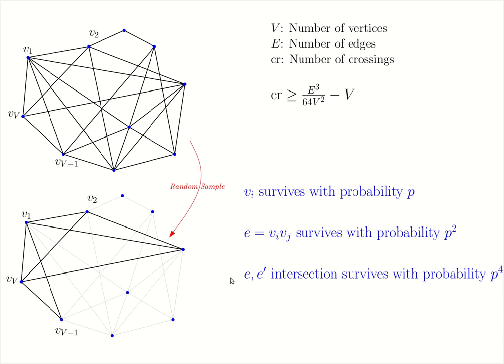How about intersections? First, observe that an intersection will need to involve four vertices. In other words, if two edges share a common endpoint, then they are not considered to be intersecting. Thus, for an intersection to survive, all four vertices involved in that intersection must be sampled.